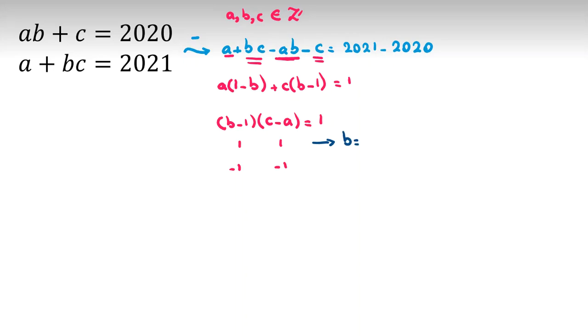The first case: b - 1 = 1, so b = 2. And c - a = 1. Now if you replace b with 2 here, then 2a + c = 2020. Also we know c - a = 1. We subtract: 2a - a is 3a, and c - c is 0, which equals 2019. If we divide both sides by 3, a will be 673.